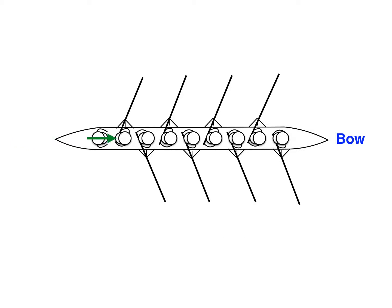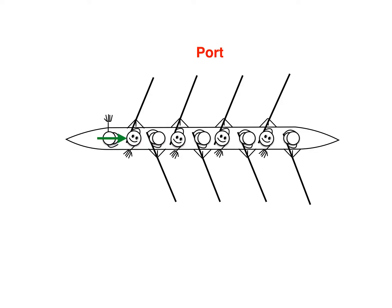Okay, so if you're facing the bow or the front, your left side is called the port side. Port side rowers, please raise your hands. Great! As you can see, the port side rowers have their oars on the left side of the boat.